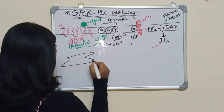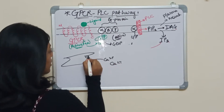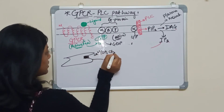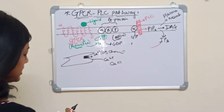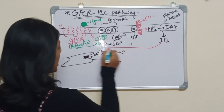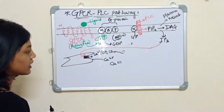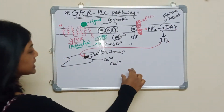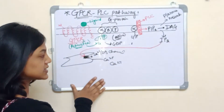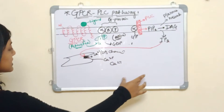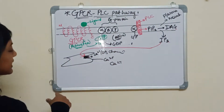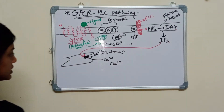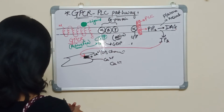Calcium was released from the ER due to the opening of the IP3 calcium channel when IP3 bound to it. The calcium binds with calmodulin to form the CC complex, which combines with cam kinase to form the CCC complex. The CCC complex phosphorylates any protein, activates it, and the activated protein shows a cellular response. This was one of the pathways in GPCR PLC signaling.